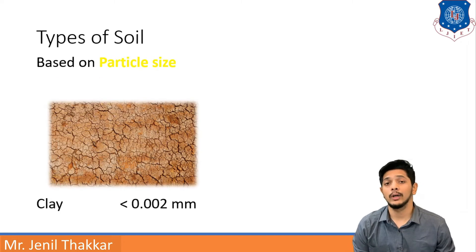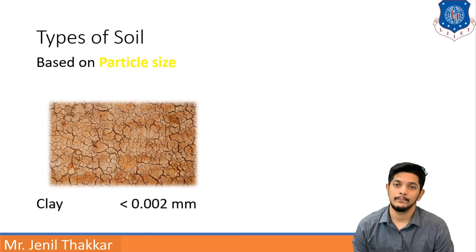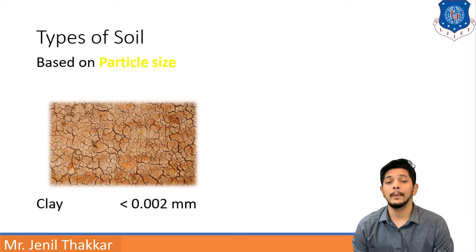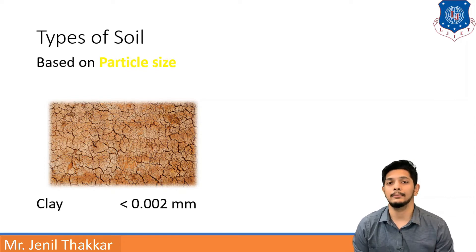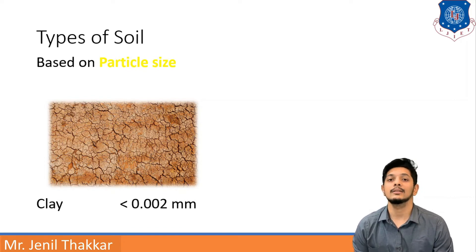Moving forward to clay — if the particle size is less than 0.002 mm, the soil type is clay.